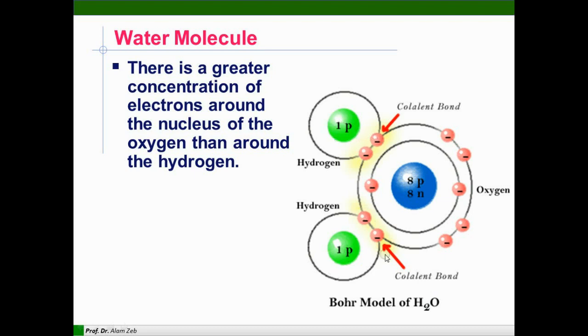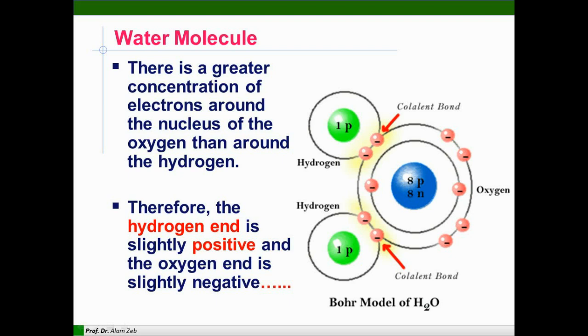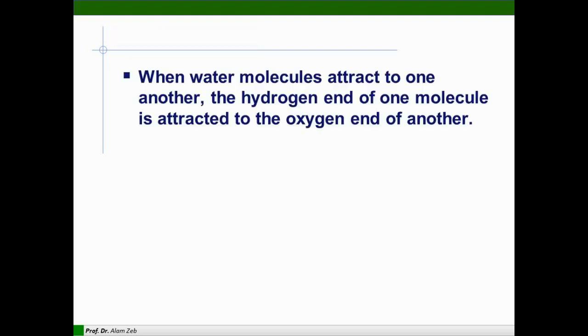The outer shell of oxygen contains two lone pairs of electrons. One hydrogen shares this electron and the other hydrogen shares this particle. These two lone pairs are also present in the system. Therefore, the hydrogen is slightly positive and oxygen is slightly negative.